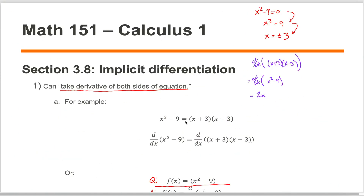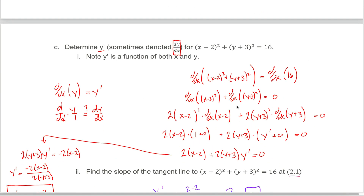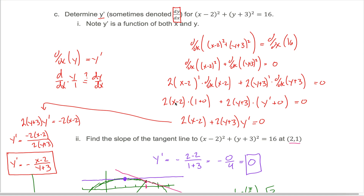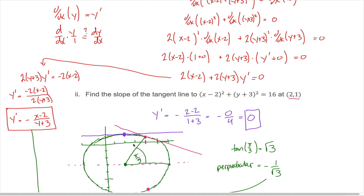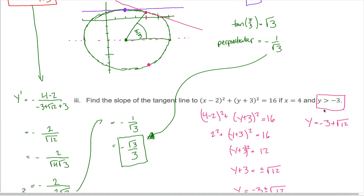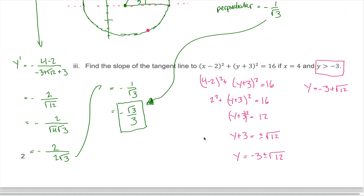To summarize implicit differentiation: take the derivative of both sides of the equation — all the rules you've learned still apply. The only difference is you treat y a little differently than x: its derivative is y prime, not one. Take the derivative of both sides, that gives you an equation with y prime in it, then solve for y prime. When evaluating at a specific point, you typically need both x and y coordinates — sometimes given, sometimes found using the original equation. More examples will follow in the next video.